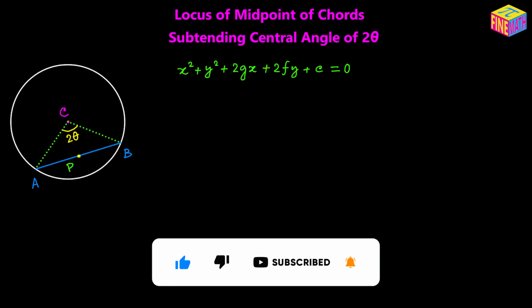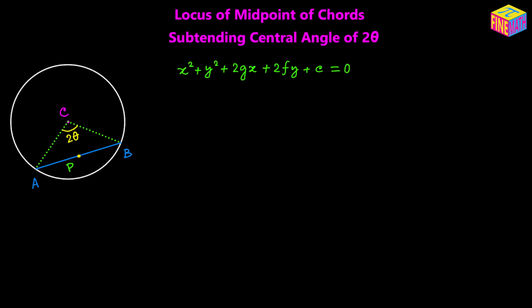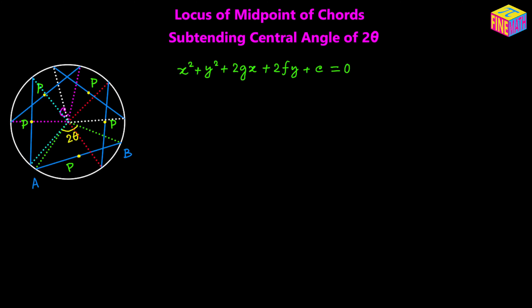Within the circle we can actually change the position of this chord maintaining the same central angle, and that way we can easily imagine that the position of the midpoint will also be changing. The chord could have been in several other positions where the central angle is still 2 theta, and in fact there could be an infinite number of positions like this.